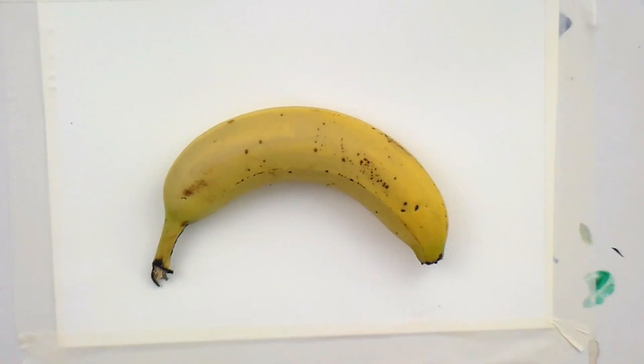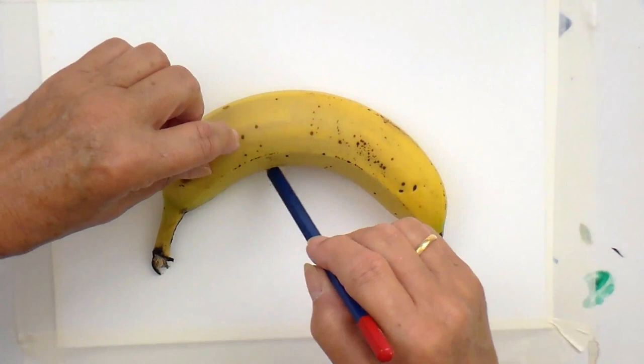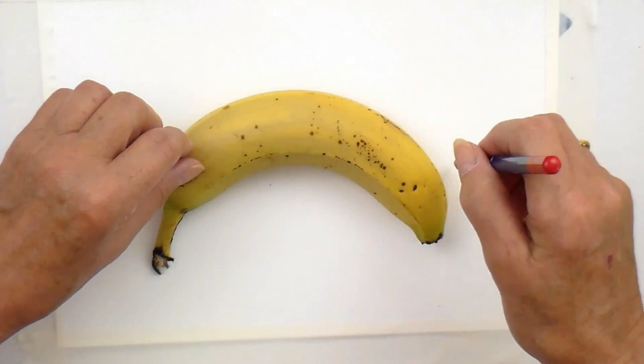Okay, let's add a banana to our bowl of fruit. I'm going to cheat actually. I'm going to draw around it. Why not? Just to get a rough idea.